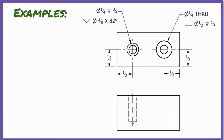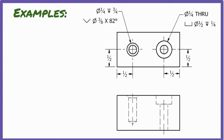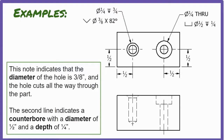In these notes, the first line contains information about the hole, while the second line contains information about the countersink or counterbore. This note indicates that the diameter of the hole is one quarter of an inch and the depth is three quarters of an inch. The second line indicates a countersink with a diameter of three eighths of an inch and an angle of 82 degrees. This note indicates that the diameter of the hole is three eighths of an inch and the hole cuts all the way through the part. The second line indicates a counterbore with a diameter of one-half inch and a depth of one-quarter inch.